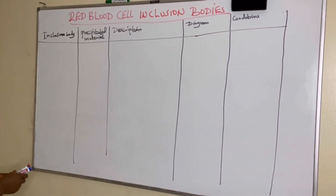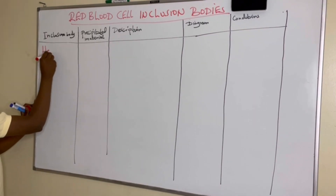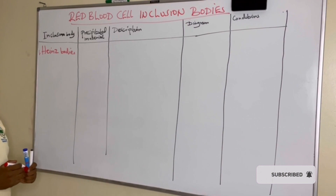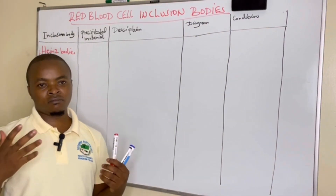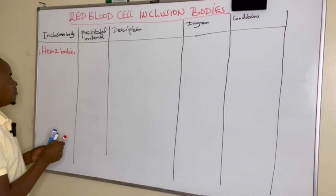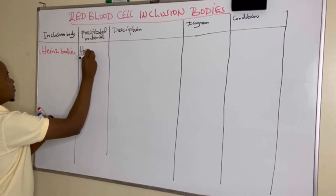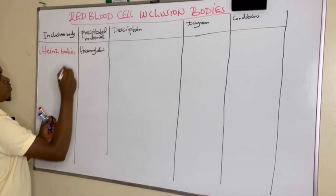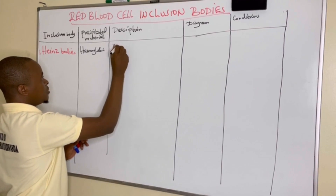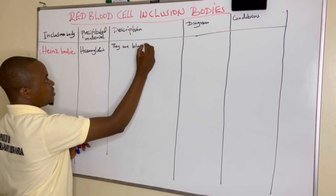The first inclusion body we want to talk about is Heinz bodies. The precipitated material in Heinz bodies is hemoglobin, and these bodies are blue or purple staining.